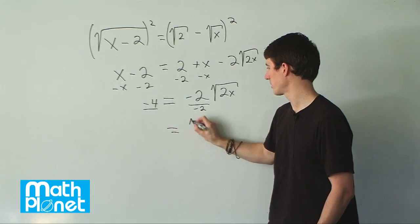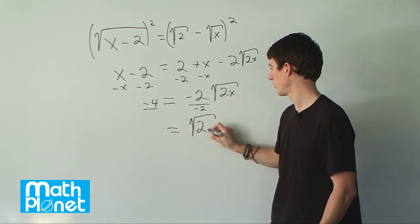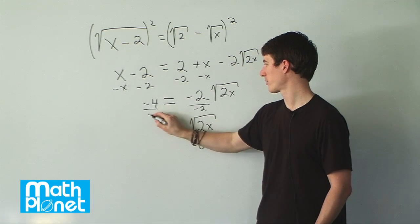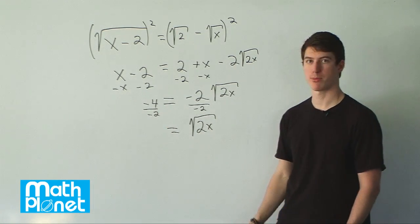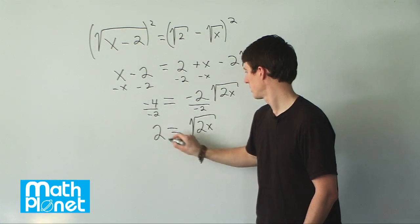That just gives us what's left here, root 2x. And then negative 4 divided by negative 2 gives us positive 2.